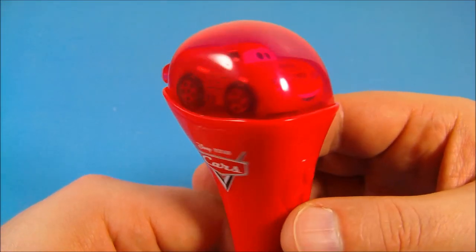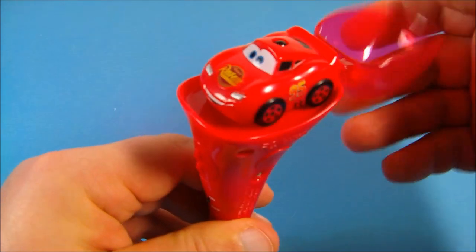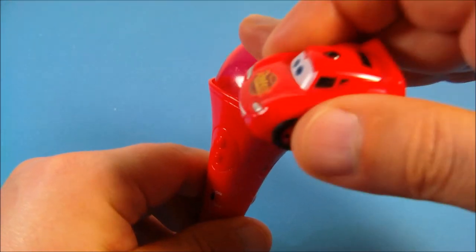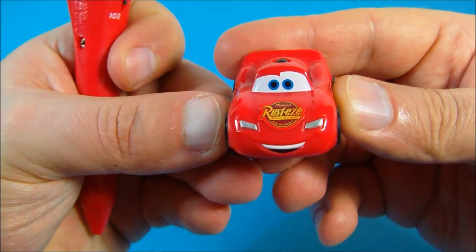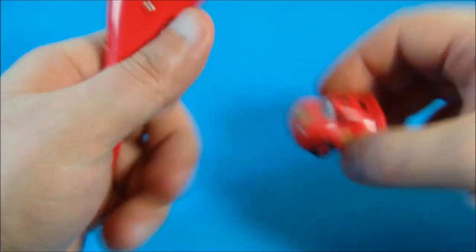And here is Lightning McQueen inside of his little compartment here. So you just pop this open just like so. Remove Lightning McQueen. So that's kind of cool. Little carrying compartment there. And there's Lightning McQueen. He looks so awesome. I love it.